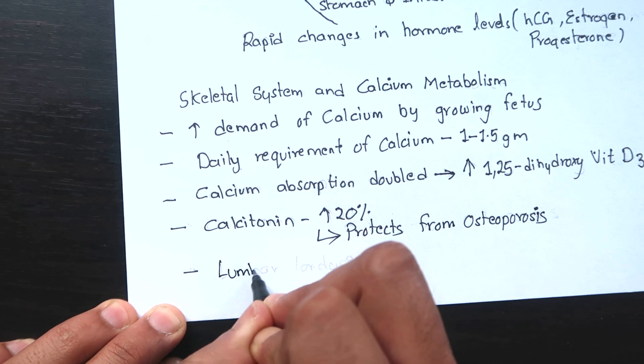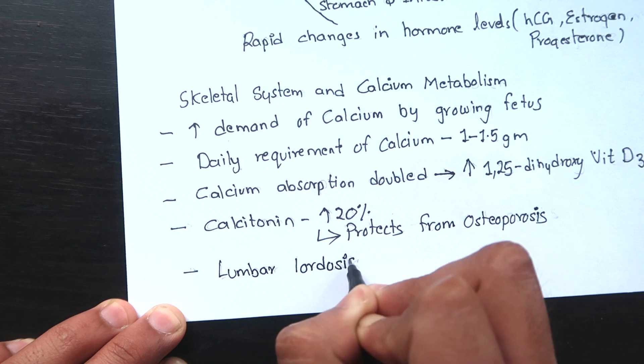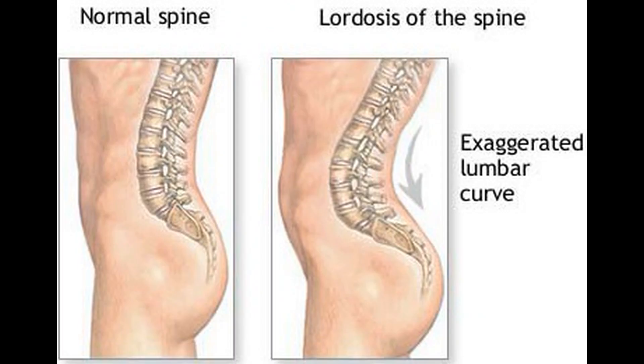Lumbar lordosis in pregnancy means inward curve of the lumbar spine in the lower back is due to the spine adjusting itself to the center of gravity as the pregnancy weight gain causes abdominal enlargement.